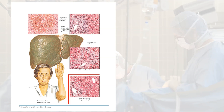Primary biliary cirrhosis is an autoimmune condition with intrahepatic biliary duct destruction, which leads to biliary cirrhosis because the bile will lead to cirrhosis of the liver.